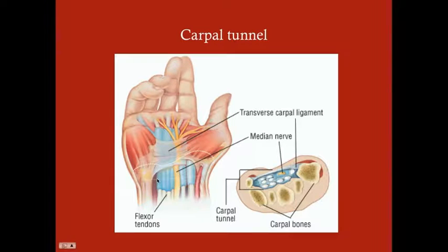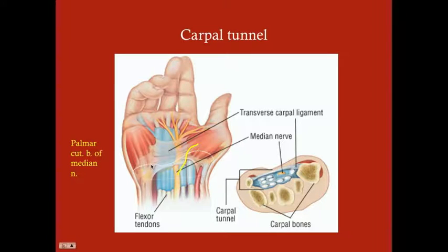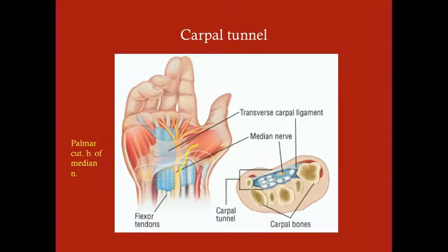Before the median nerve passes through the carpal tunnel, it gives off a branch called the palmar cutaneous branch of the median nerve. This is a cutaneous sensory branch that goes to the lateral palmar hand. Remember this — it becomes very important later.